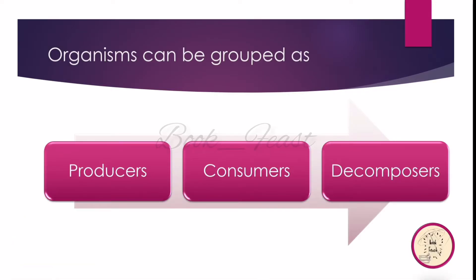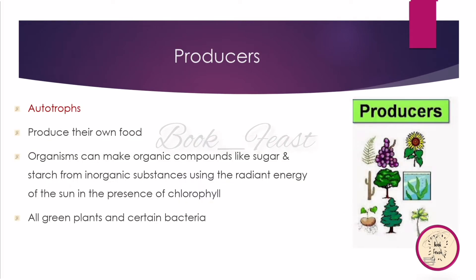Organisms are divided into 3 groups. First: Producers. Second: Consumers. Third: Decomposers. Producers are also called Autotrophs. They use sunlight, water, carbon dioxide, and other chemicals to produce food. Examples of Producers include green plants and Cyanobacteria.